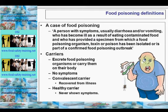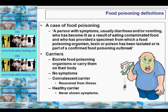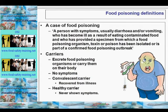An outbreak of food poisoning is where two or more people with a common exposure experience a similar illness. A general outbreak is where two or more cases are in different households. A family outbreak is where two or more cases are in the same household. A sporadic case refers to isolated cases with no connection with other cases — the majority of food poisoning cases are sporadic, and this may be part of an undetected outbreak related to retailing or manufacture. Carriers excrete food poisoning organisms or carry them on their body without showing any symptoms. There are two types: a convalescent carrier who has recovered from the illness, and a healthy carrier who has never shown any symptoms.